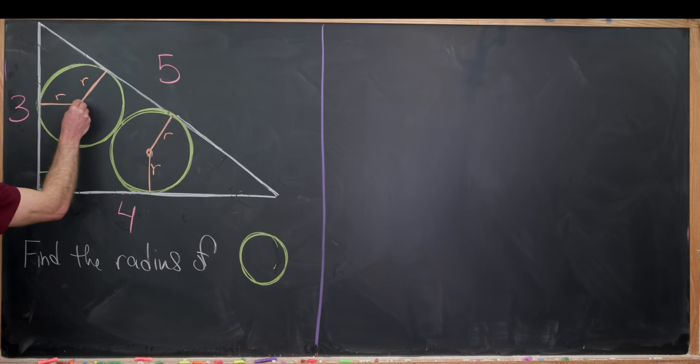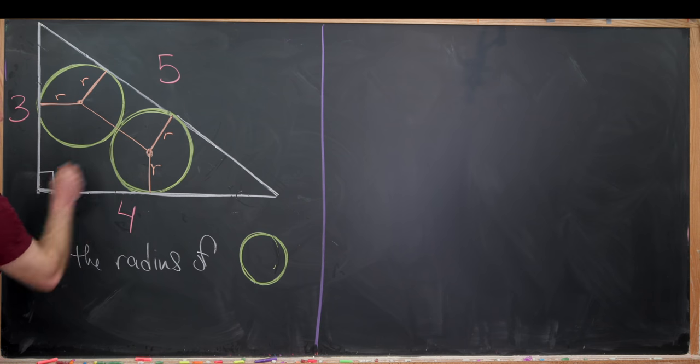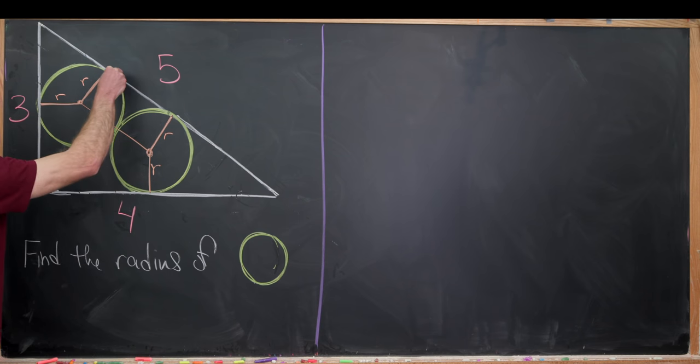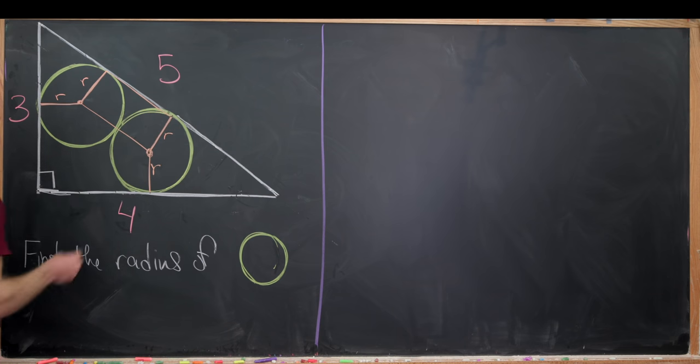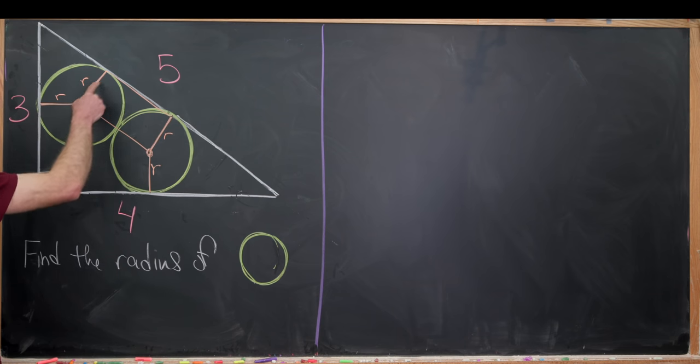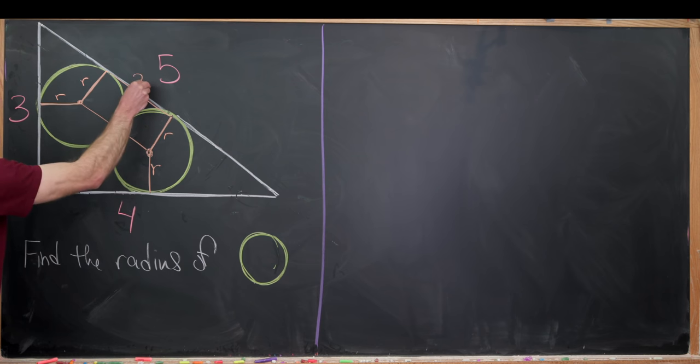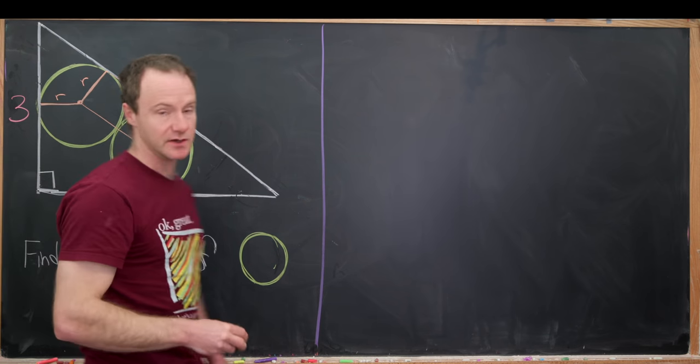And now that gives us some real motivation to connect these two centers, and that connects and builds a rectangle. Notice that rectangle has one length of r, and one length of two times r, because we've got two radii here. So that's looking good.